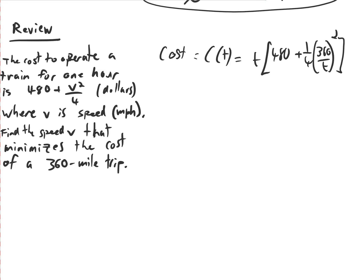This is one of those times where it's easier to simplify first. So we can simplify that a little bit as 480T. We're distributing this T. And then plus 360 squared over 4. And then when we multiply, this will give us two T's in the denominator. Then we multiply by T, we'll get one T in the denominator. So times 1 over T. Then we took the derivative of this thing.